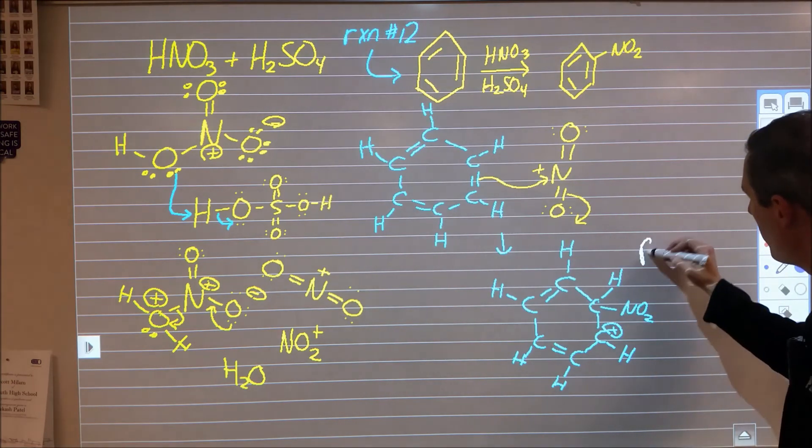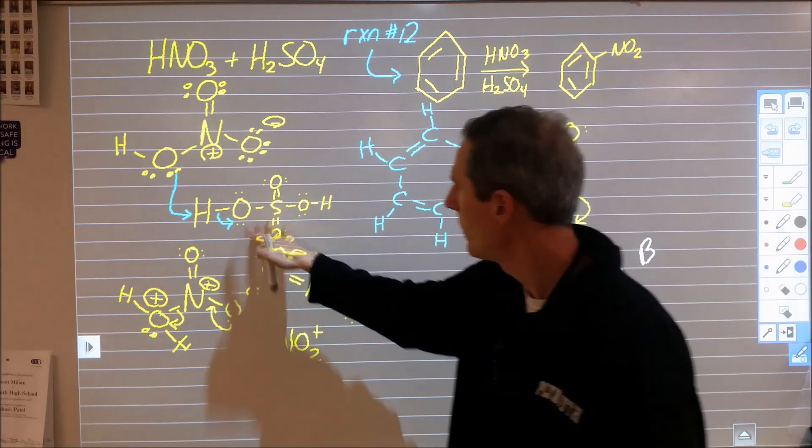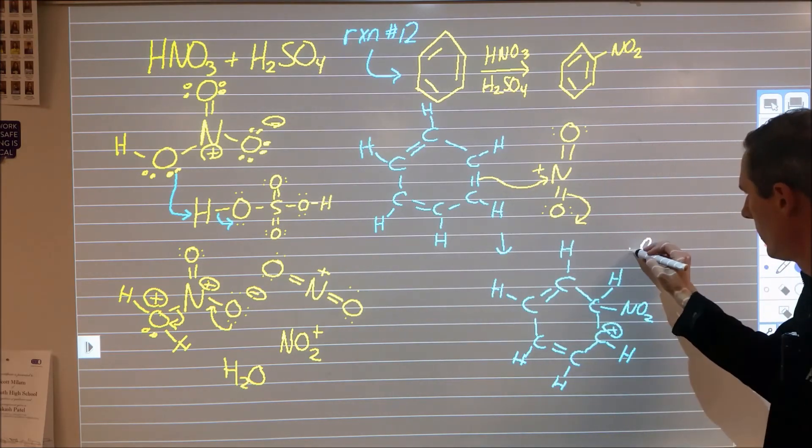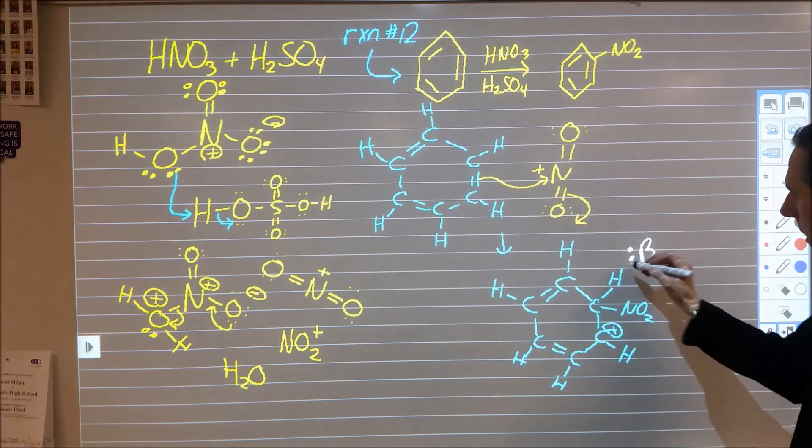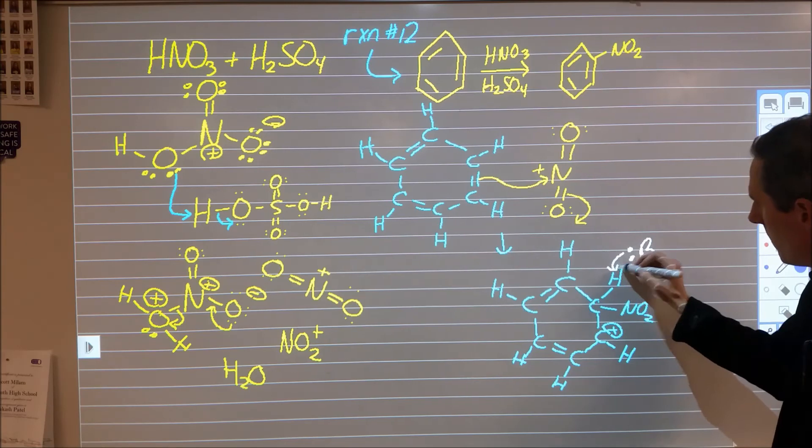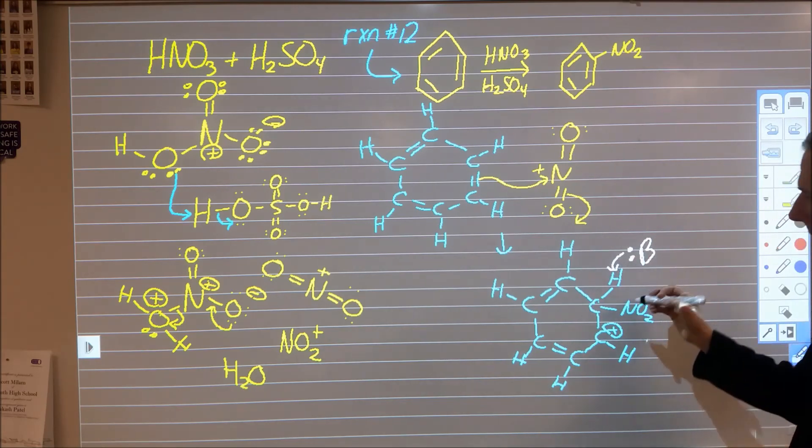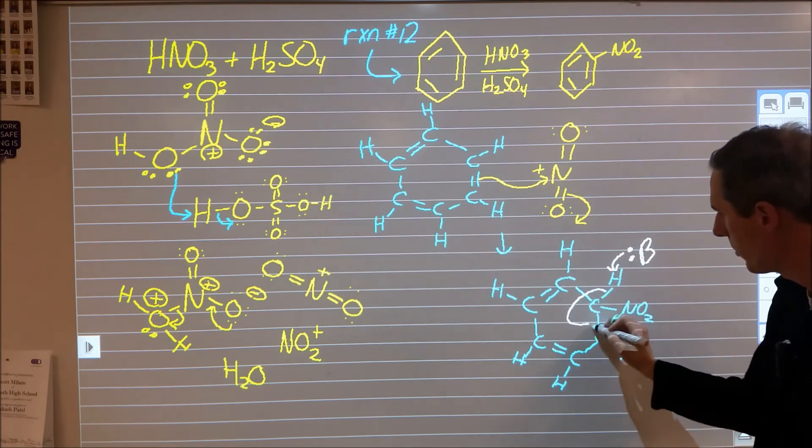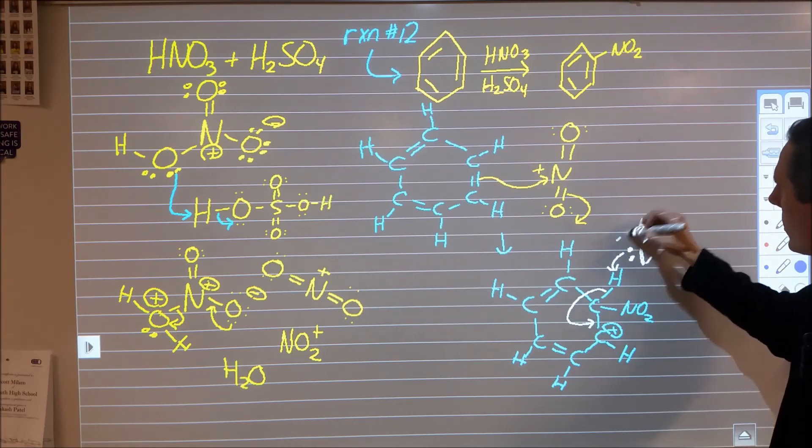From here some base whether it's the bisulfate we produced over here or something else swoops in and takes away this hydrogen to form a conjugate acid and the electrons here come back to reform this double bond which then produces